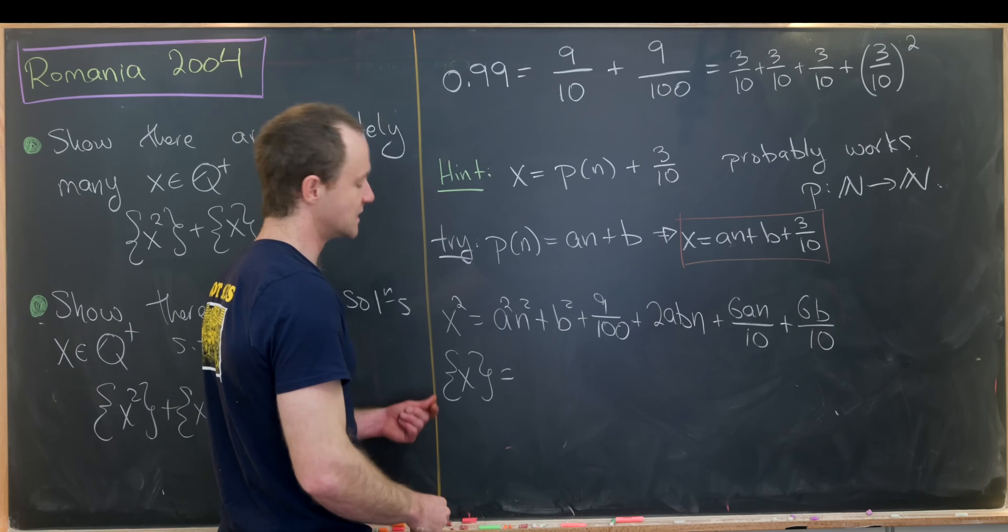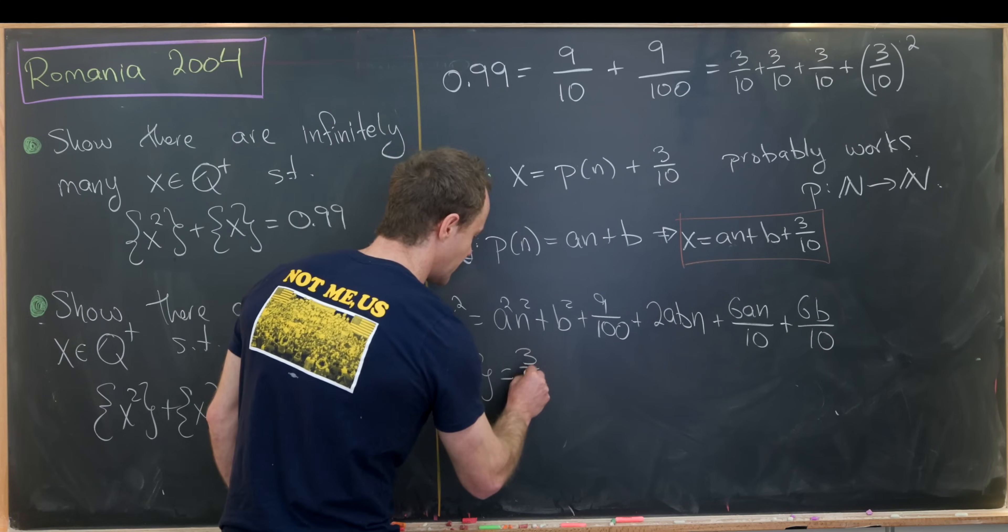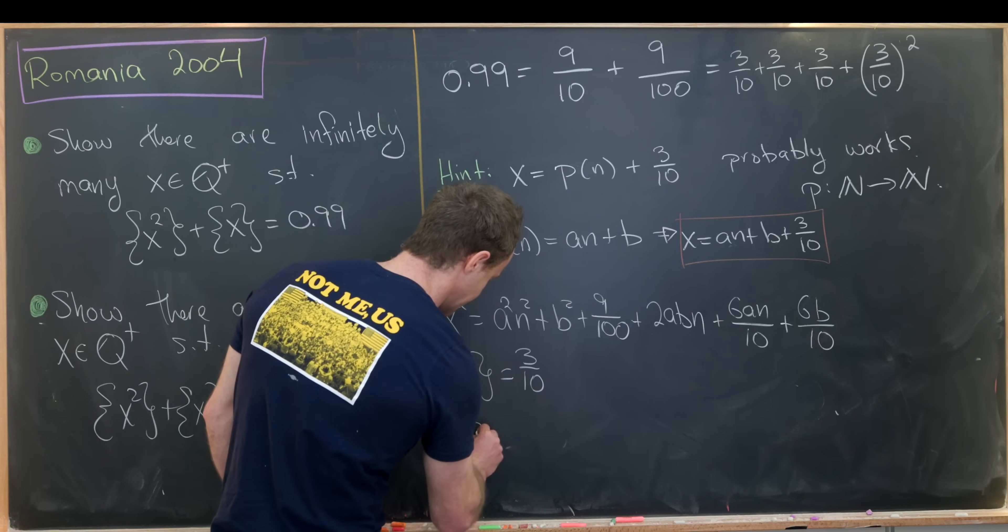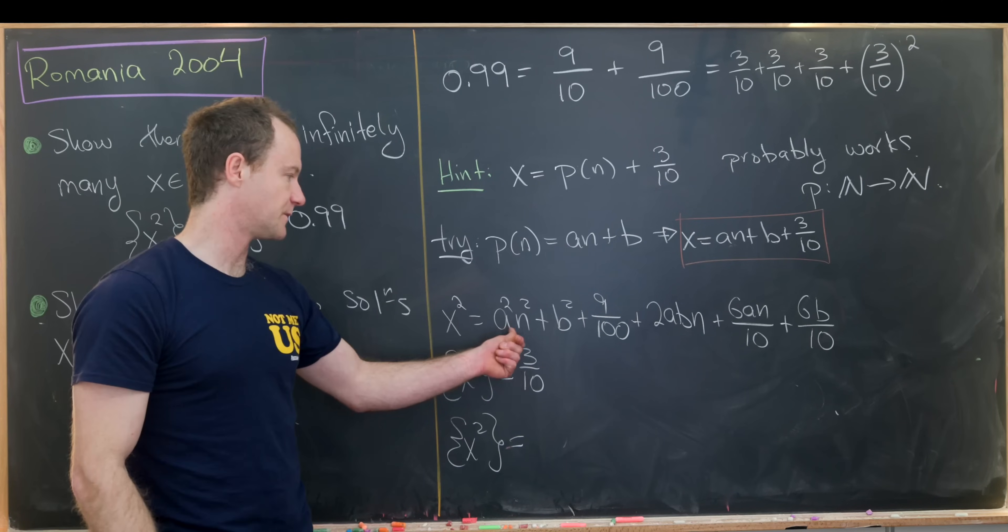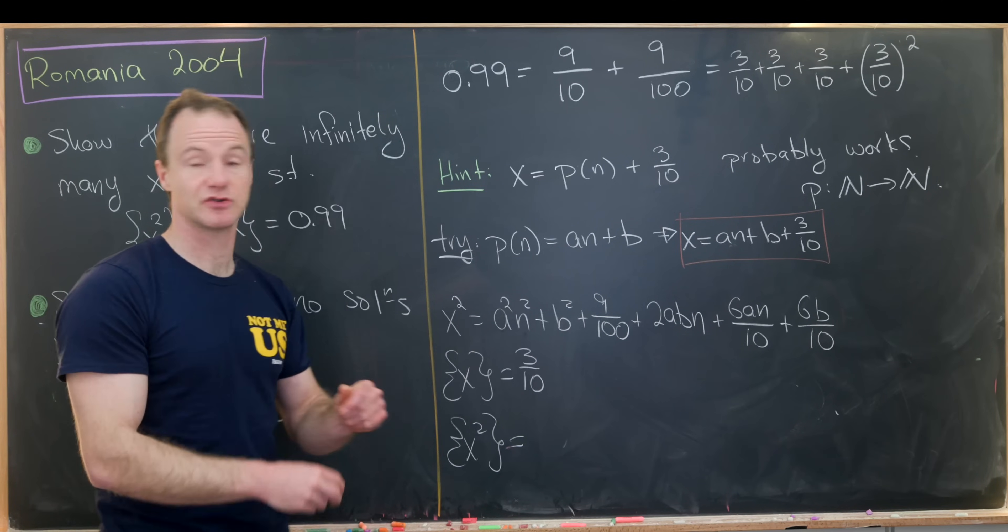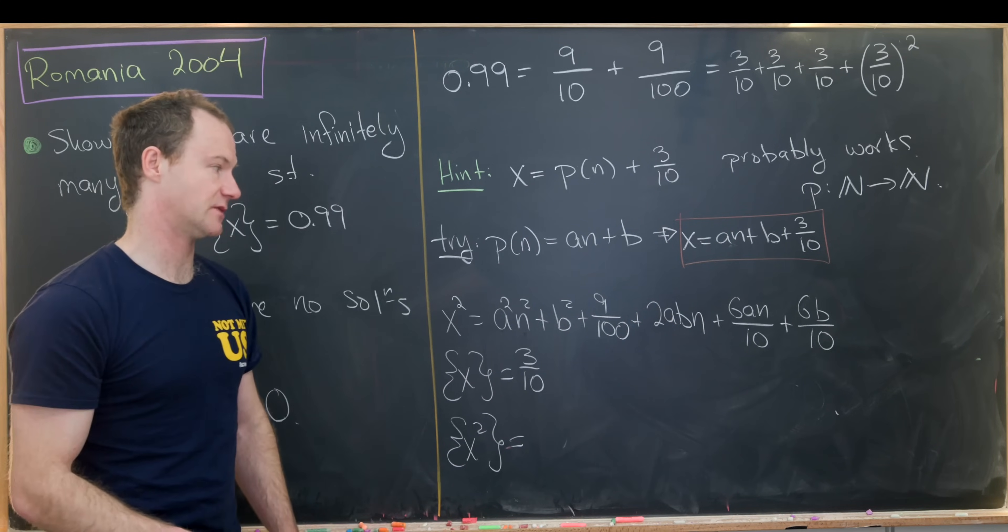First of all, if we take the fractional part of x it's quite simple because a times n and b are both natural numbers. So taking the fractional part we get 3 over 10. Now let's see what happens when we take the fractional part of x squared. So a squared n squared is a natural number. We don't need that. B squared is a natural number. 2abn is also a natural number.